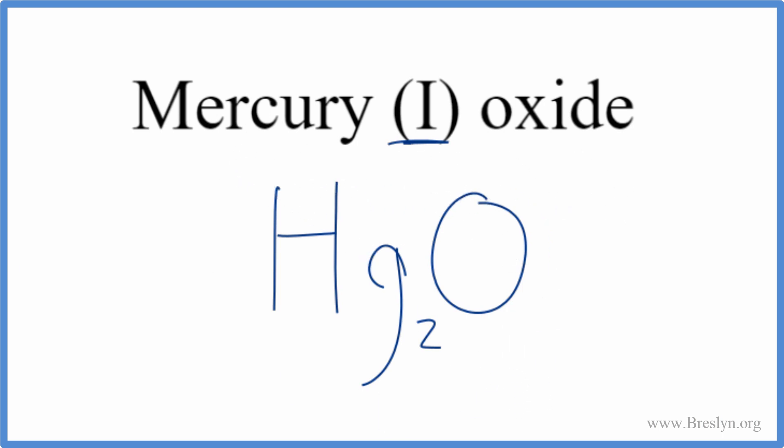Let's quickly check our work. We said mercury was one plus because of the Roman numeral there. Oxygen, that's two minus. So I have one oxygen - one times two minus, that's two minus.